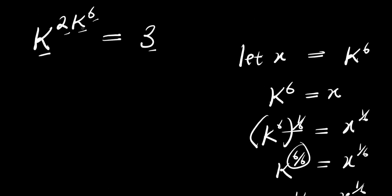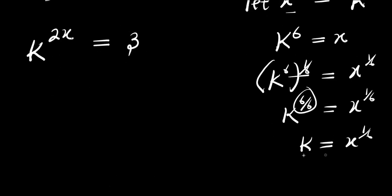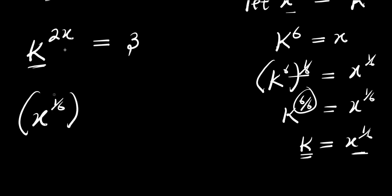Now remember, k power 6 here is x, so this becomes k power 2 times x equals 3. Also remember that k is x power 1 over 6, so I'm going to substitute x power 1 over 6 raised to the power of 2, times x, equals 3.